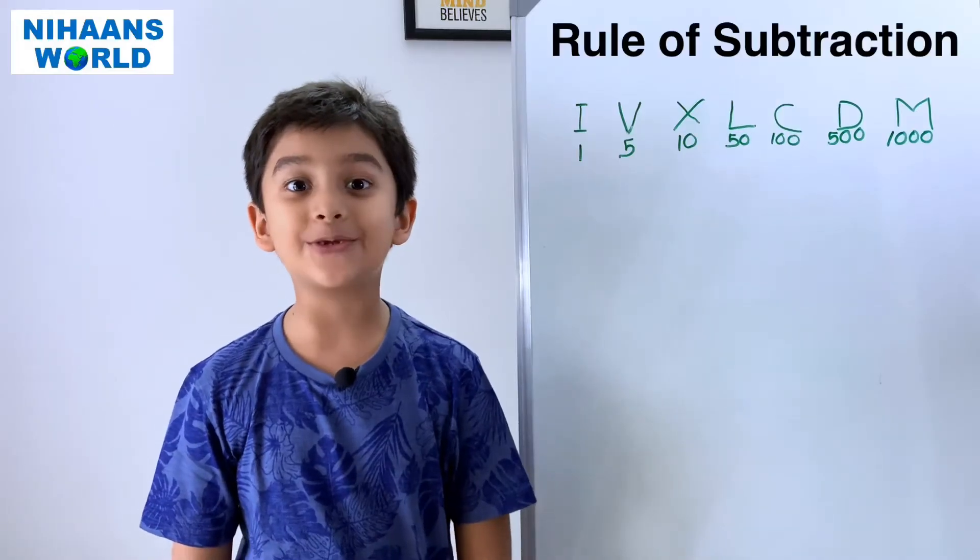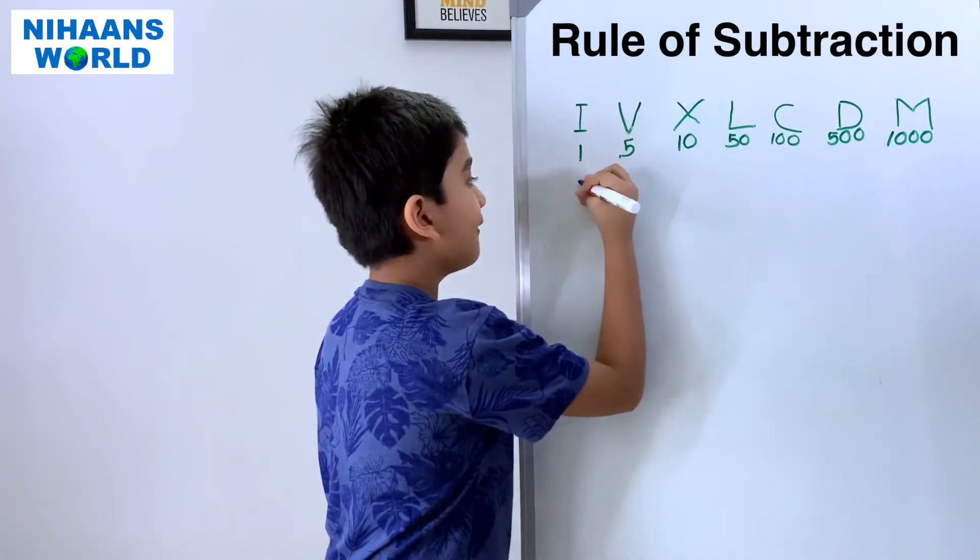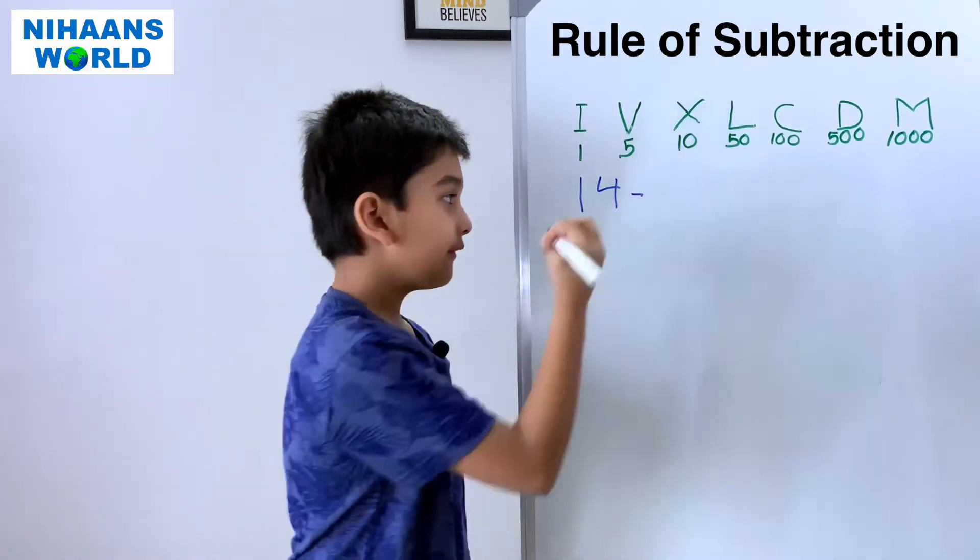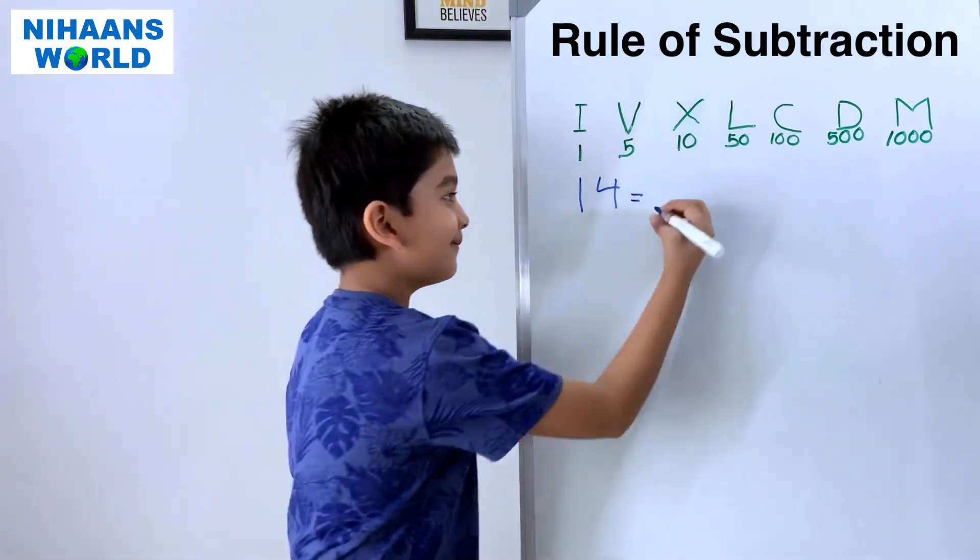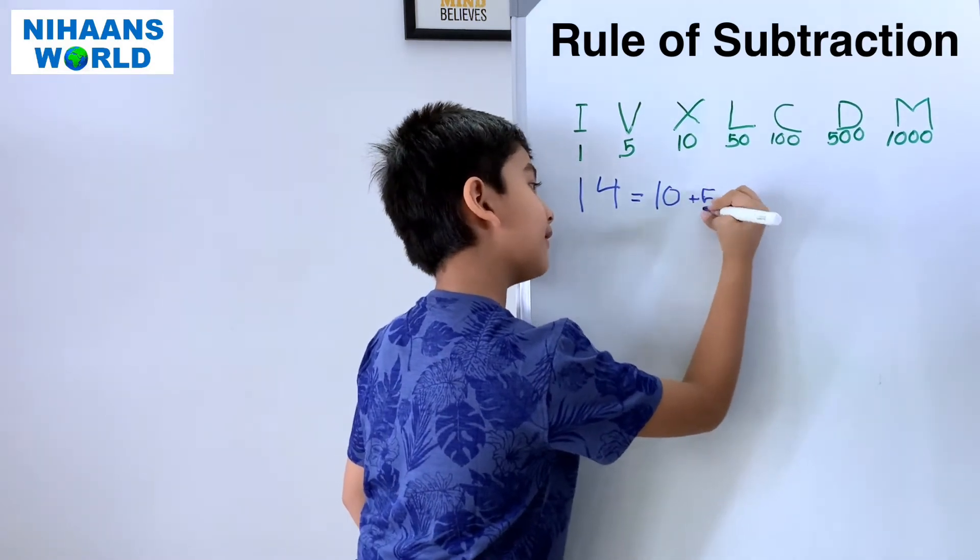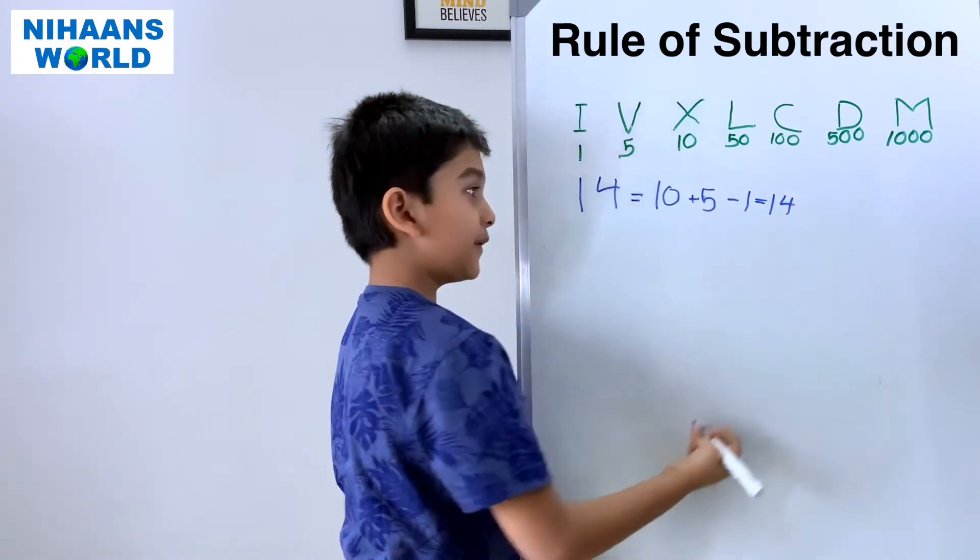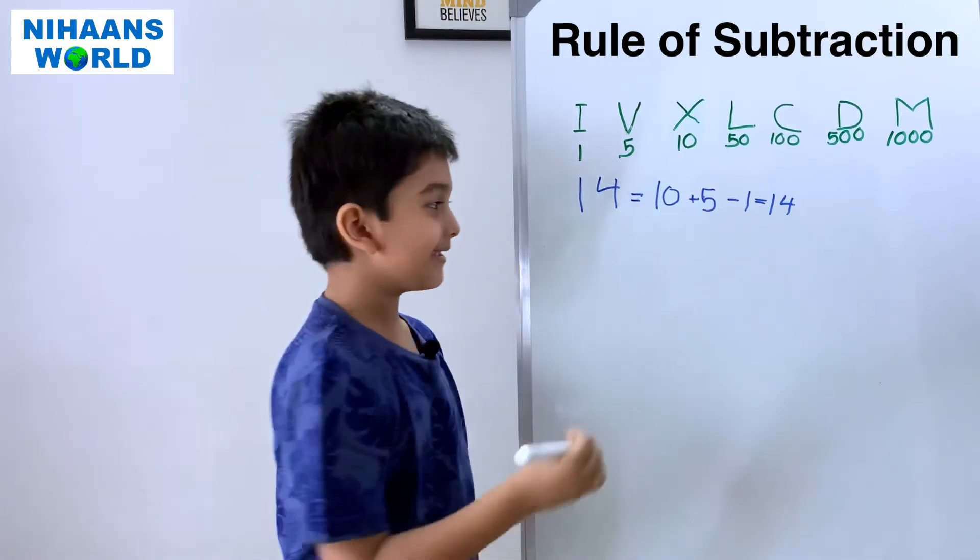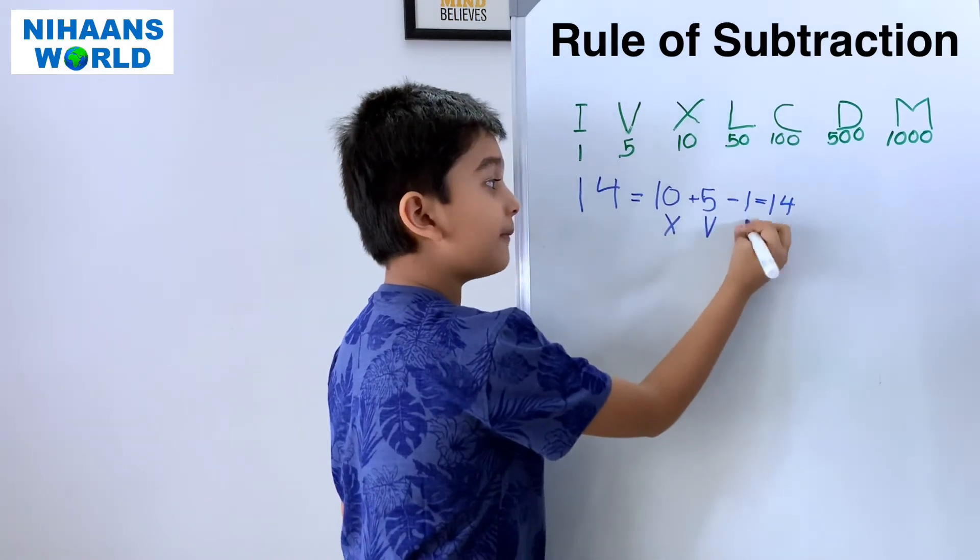Let's do the example of Rule of Subtraction: fourteen. So, how do we write fourteen in expanded form? Ten plus five minus one is equal to fourteen. So, now we have to write the numbers in Roman numerals. Ten is X, five is V.